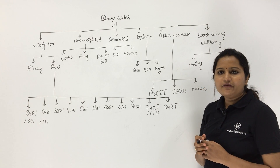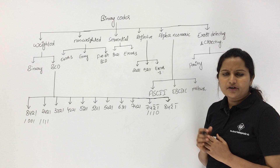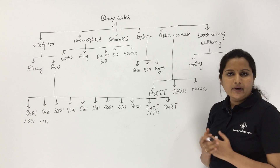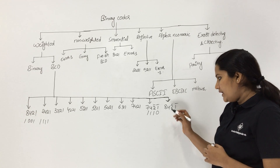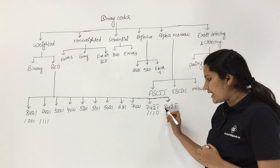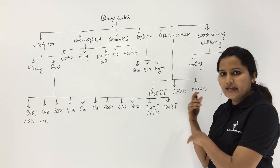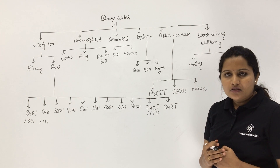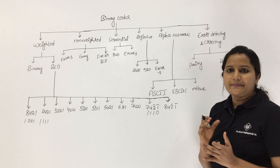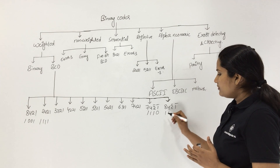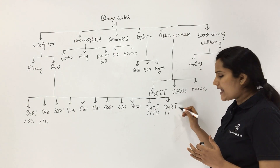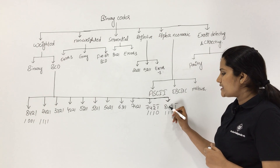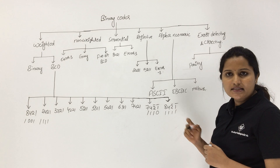To represent 9 in 842̄1̄ code: 8 alone can't represent 9, so we need to take 4 as well. 8 plus 4 gives 12. To get 9, you need to subtract 3. So we add 8 plus 4 and subtract using the last two digits 2̄1̄: 8 plus 4 minus 2 minus 1 gives 9.